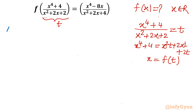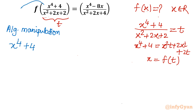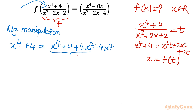The problem can be solved using algebraic manipulation. Let me write our LHS first: x⁴ + 4. I will add and subtract 4x² to manipulate this expression. Adding 4x² and subtracting 4x², we can see from the first three terms that it forms a perfect square: (x² + 2)².